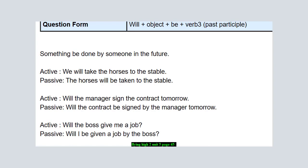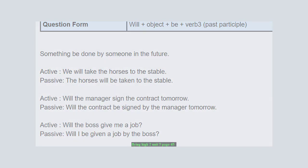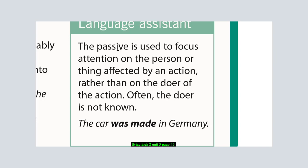As we've learned, first define the verb, subject, and object. 'Take' is the verb, 'we' is the subject, 'the horses' is the object. Place the object first: 'The horses'. We do not need to use 'is', 'are', 'was', or 'were', because in the future form we always use 'will be'. Then verb three, past participle, 'by us to the stable'. The passive is used to focus attention on the person or thing affected by an action rather than on the doer. Often the doer is not known. Example: 'The car was made in Germany', but we do not know the actual doer of the action.